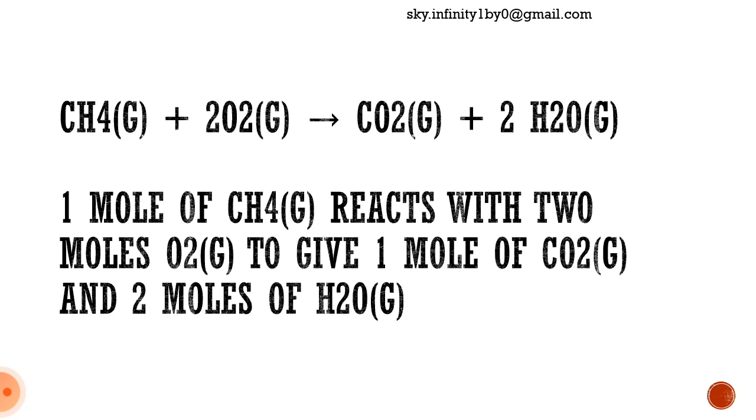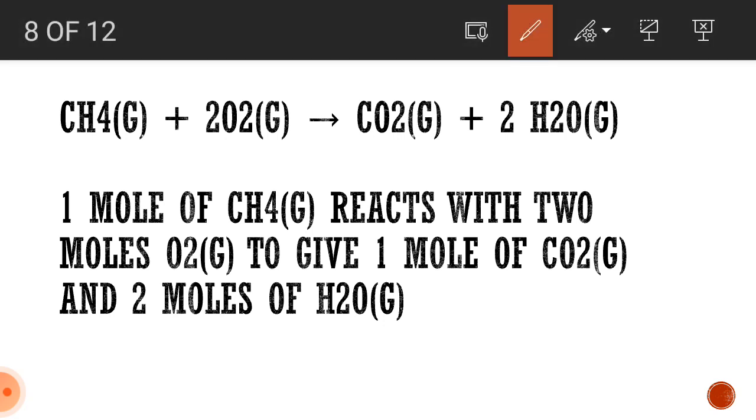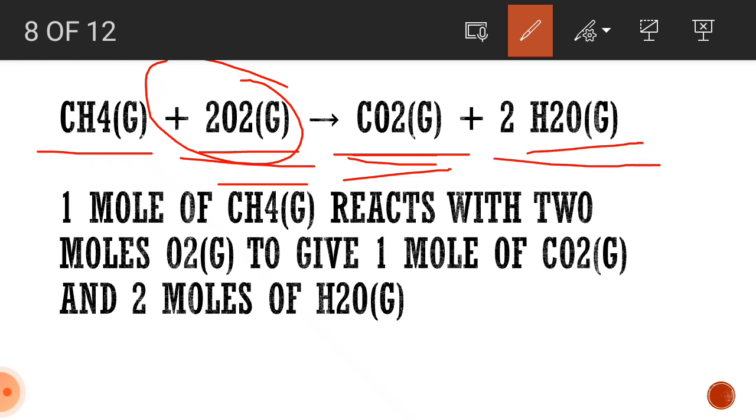Now, let's consider it during a chemical reaction. When there is a chemical reaction taking place between methane and oxygen, it leads to evolution of carbon dioxide gas and water as vapors. So, by using stoichiometry, we say that one mole of methane reacts with two moles of oxygen. See here, the number here is two. To give one mole of carbon dioxide gas and two moles of water.